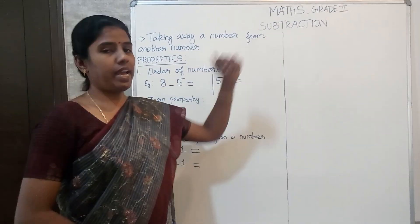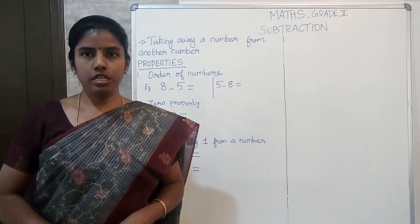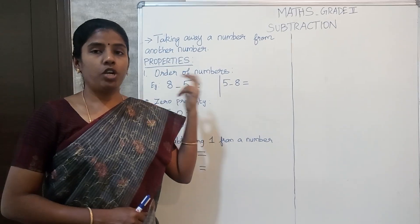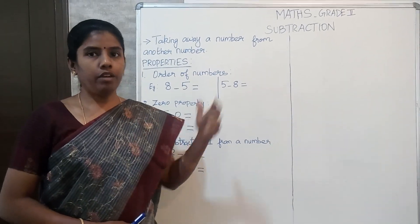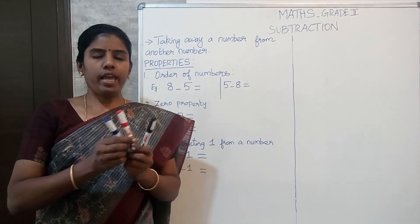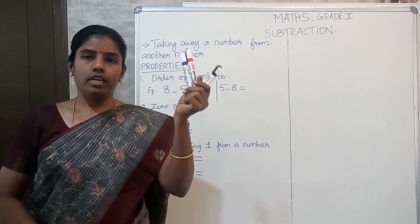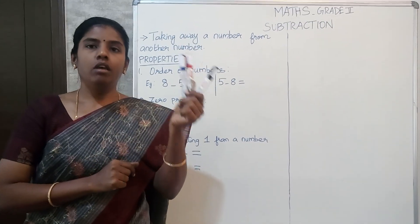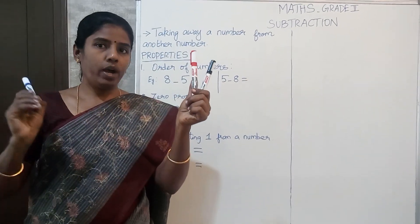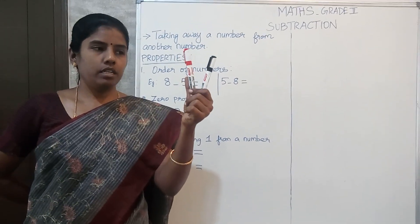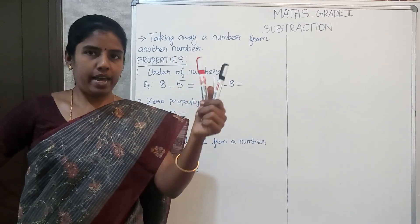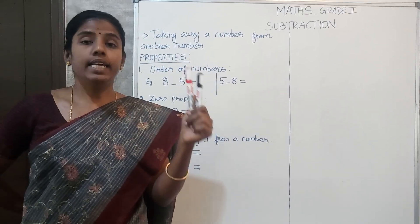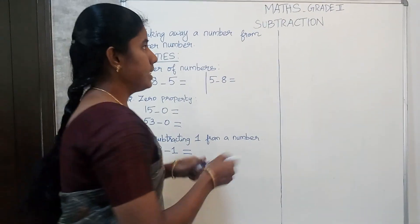Our today's concept is subtraction. What do you mean by subtraction? Subtraction means taking away a number from another number. For example, what do I have in my hand? Yes, it's markers. So how many do I have? 1, 2, 3. I have 3 markers with me. So what happens if I take away 1 from here? The answer is 2. So taking away a number from another number is subtraction, and the answer that we get is called the difference.